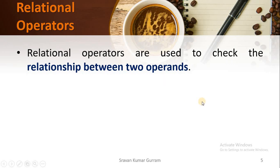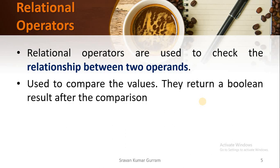Relational operators are used to check the relationship between two operands. As the name suggests, relational operators are used to know the relation between operands. We can get this relation by comparing the values. When we compare two operands, relational operators return a boolean value — meaning these operators return either true or false.